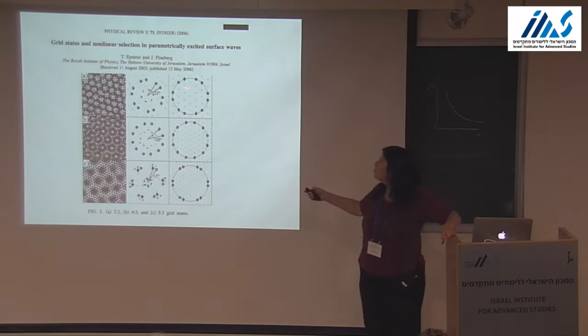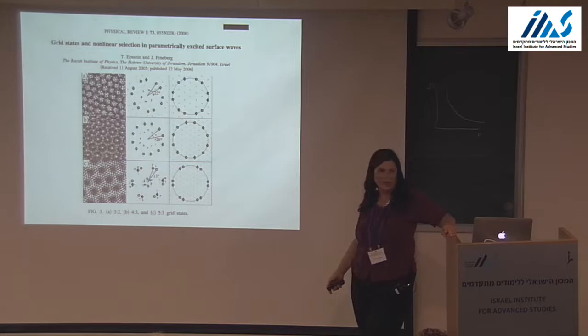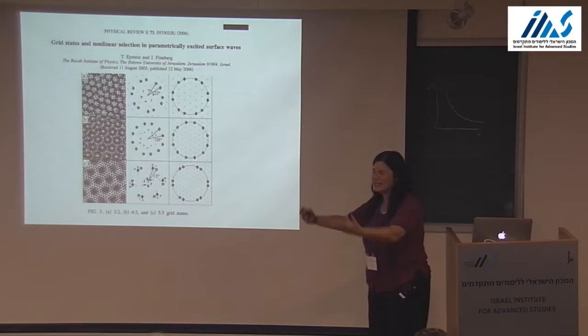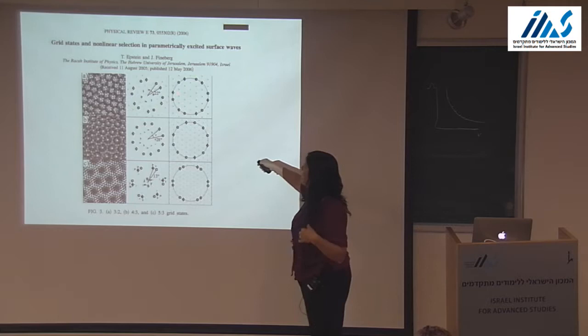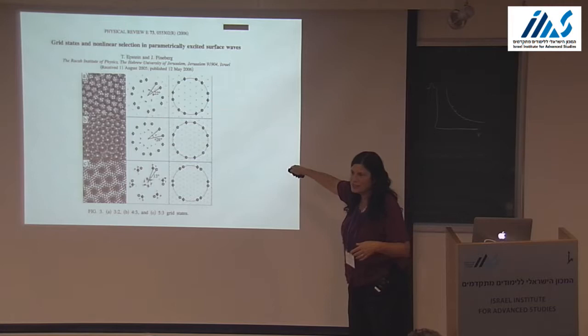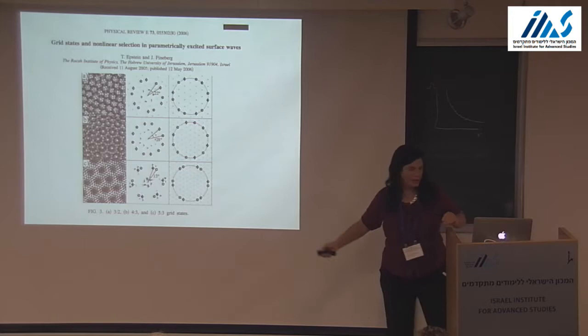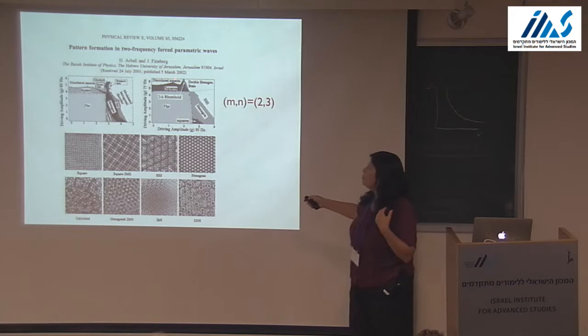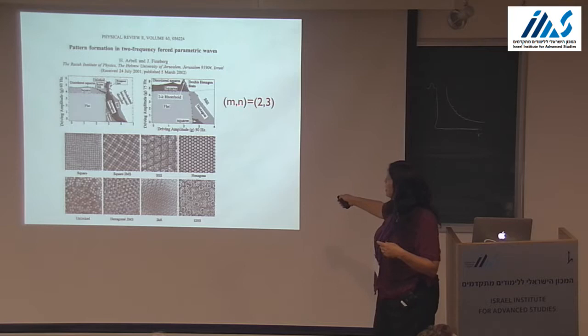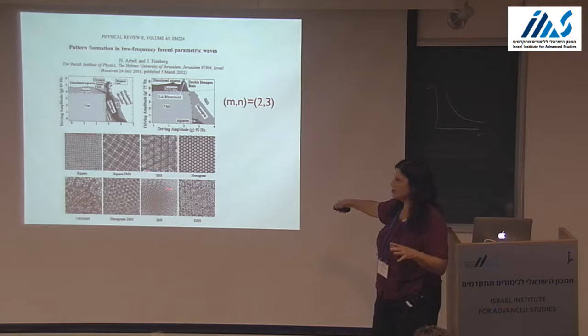Two-frequency forcing: this is Epstein and Feinberg. I always thought it was kind of cruel that the honoree at a birthday conference has to sit and listen to everybody else's work, so I'm giving him maximum exposure here. This is his work — you see different pictures observed in the lab and their Fourier spectra, which have two different wavelengths. You see the discretization of orientations, which is not predicted by linear theory.